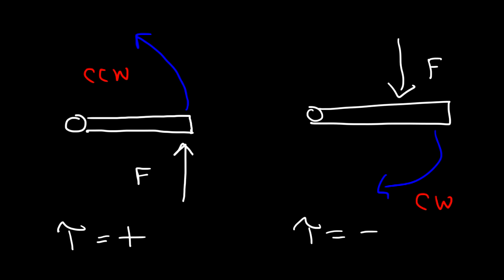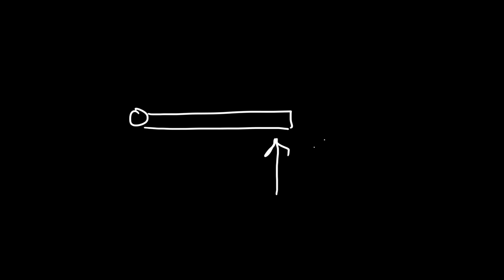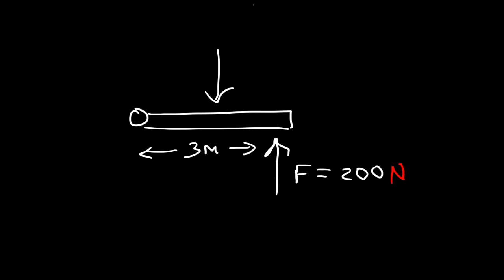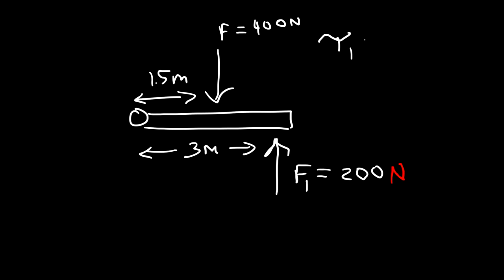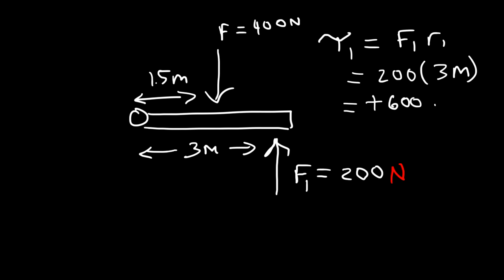Example: with an axis of rotation, apply a 200-newton force 3 meters away and a 400-newton force 1.5 meters away — calculate the net torque. Torque 1 is F1 times R1 = 200 × 3 = positive 600 N·m, acting counterclockwise. Torque 2 tends to rotate the object clockwise, so it is negative: −400 × 1.5 = −600 N·m. The net torque is +600 + (−600) = 0, meaning the object is in equilibrium and will not rotate.